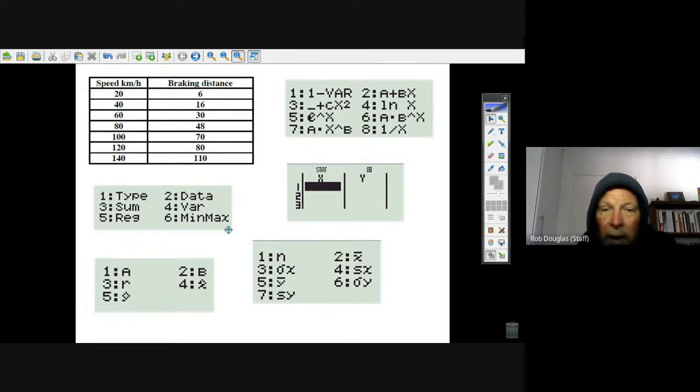If you hit four, you get the mean of the x values and the standard deviation of the x values. Number five is the mean of the y values and number six is the standard deviation of the y values. They might ask questions about that.